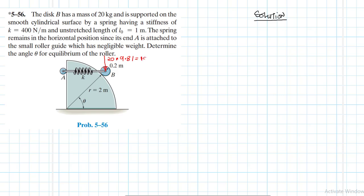20 by 9.81 we have 196.2 newtons. What else do we have? We have a normal force coming from this disk and it will act at that point where the disk is tangential to the cylindrical surface.